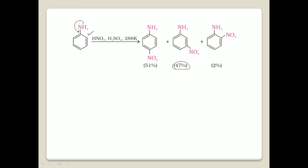So majorly the electrophile attacks on the ortho and para position, but in this case meta is also formed in a higher quantity. Why? Because this nitration must be carried out in the presence of acid like H2SO4. Here, H2SO4 is a proton donor — the proton attacks on the NH2 because this amine is basic in nature.